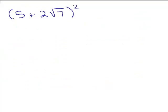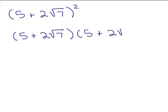How about this problem: 5 plus 2 square roots of 7, squared. By the way, that doesn't mean you just square the first term and square the second term. It means 5 plus 2 square roots of 7 times another 5 plus 2 square roots of 7. You could write it like that, or use the formula for squaring a binomial. Let's do the FOIL method.